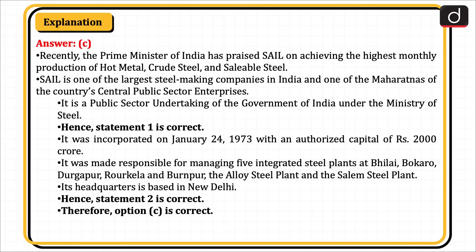It was incorporated on January 24, 1973 with an authorized capital of Rs. 2,000 crore. It was responsible for managing five integrated steel plants at Bhilai, Bokaro, Durgapur, Rourkela, and Burnpur, the Alloy Steel Plant, and the Salem Steel Plant. Its headquarters is based in New Delhi. Hence, statement 2 is also correct. Therefore, option C is correct.